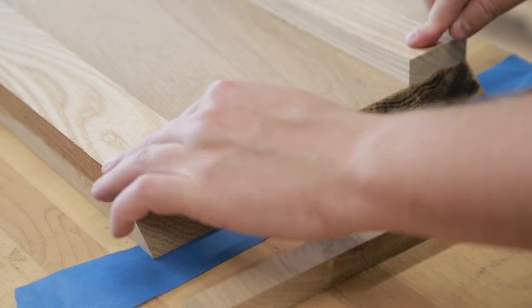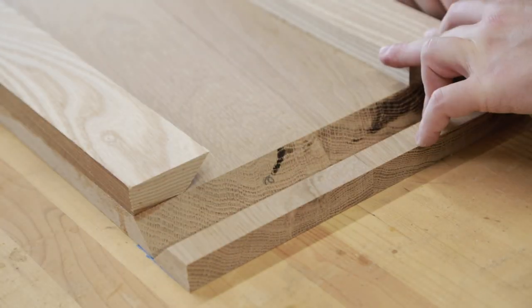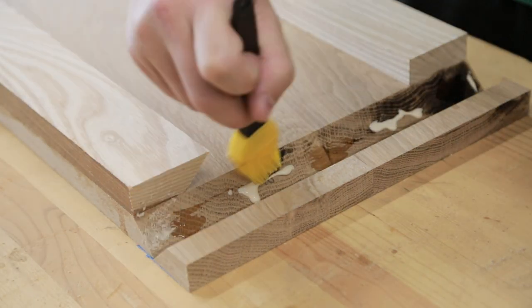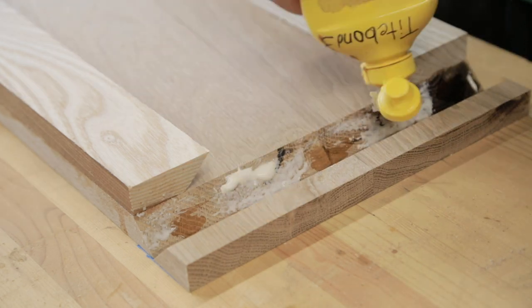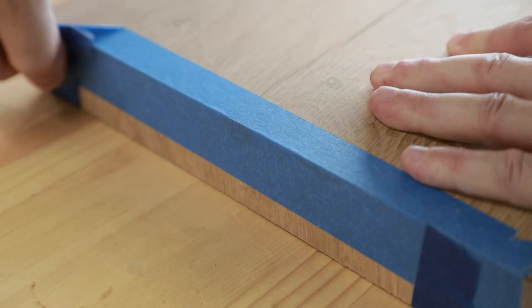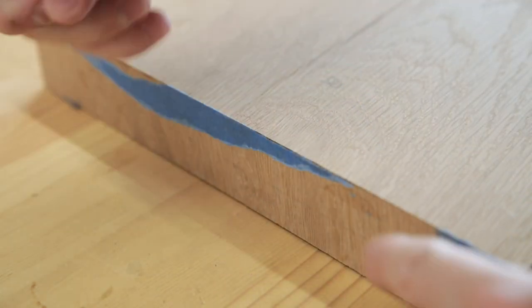For the glue up, I used painters tape again and a little bit of CA glue so that the miters can be held tight as the wood glue dries. For the most part, these turned out pretty good. Any gaps can be fixed by filling or rounding over with a screwdriver.